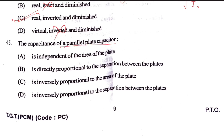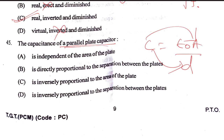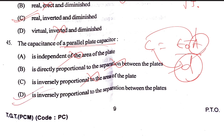The capacitance of a parallel plate capacitor is C = ε₀A/D. The capacitance is directly proportional to the area A of the plates, and inversely proportional to the separation D between the plates. It is independent of area when area varies inversely — D is the right answer.